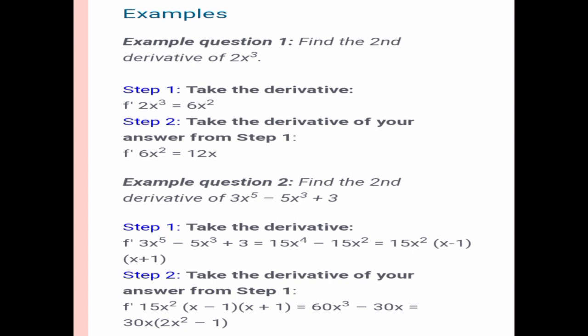That is equal to 60x³ + 30x. So, 30x times the quantity of (2x² - 1). So, that's the answer of the second derivative from the question. Thank you.